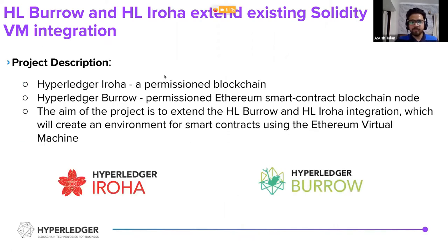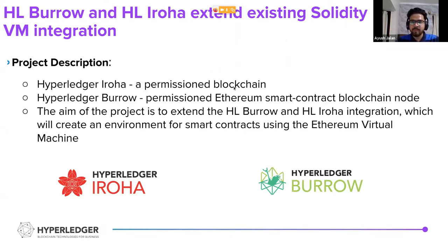I would like to give you a brief description about the Hyperledger projects involved. Hyperledger Iroha is a permissioned blockchain system which can be used to manage assets, digital assets, identities and serialized data. It can also be used to create applications which can help to settle inter-bank settlements, national identities, logistics and many such applications. Hyperledger Burrow is a permissioned Ethereum smart contract blockchain node. It uses smart contracts written in Solidity on a permissioned virtual machine and it works on a proof of stake consensus algorithm.